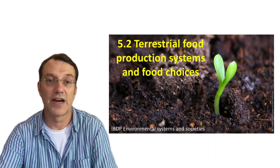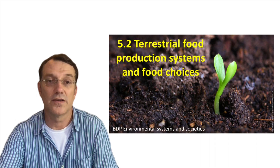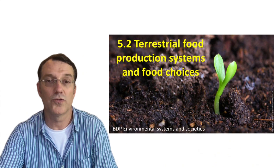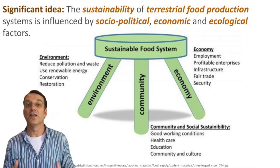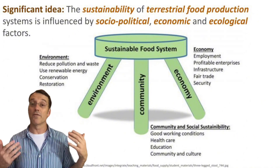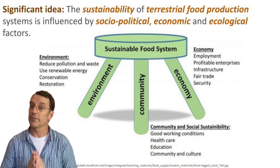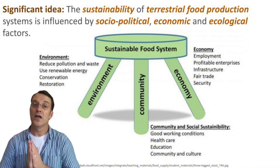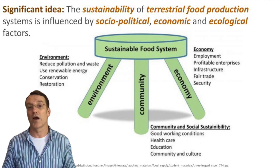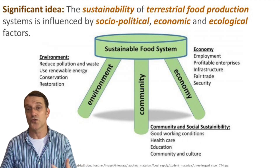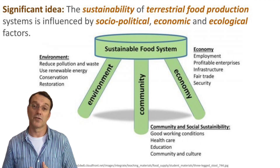Welcome to another 5e Environmental Systems and Societies video. Today's topic is 5.2 terrestrial food production systems. Terrestrial food production systems are complex and their sustainability depends on a variety of factors. Just like a three-legged stool needs all its legs to stand, sustainable food production requires a balance of social, economic, and environmental considerations.